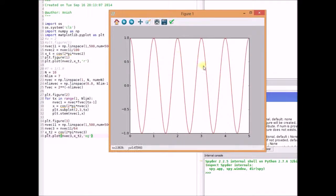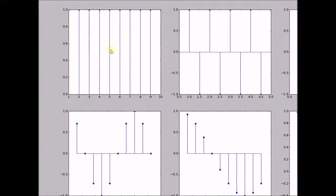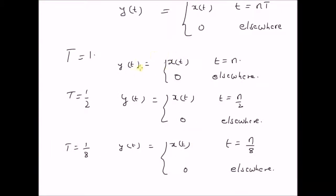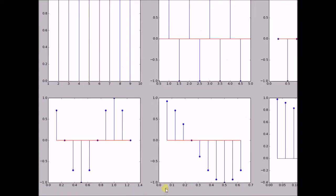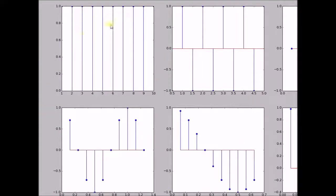The first plot is the original cosine signal cos(2πt). The second plot corresponds to the sampling interval T = 1. For T = 1, we can clearly see that y(t) = x(t) for integer values of t. For integer values, cos(2πn) = 1. Therefore, when T = 1, we should see y(t) = 1 for all integer values of t and 0 elsewhere, which is what we see in the first plot.